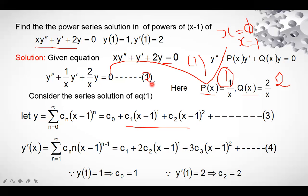Differentiating y gives y' = Σ (n=1 to ∞) n·cₙ(x − 1)ⁿ⁻¹. Note the summation starts from n = 1, not 0, because substituting n = 0 gives a zero term. Expanding by putting n = 1, 2, 3, … gives the y' expansion.